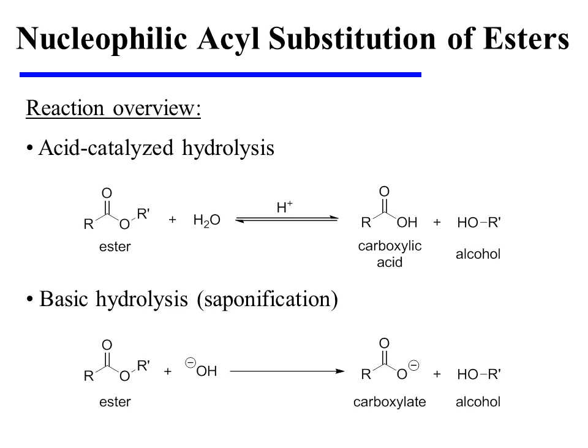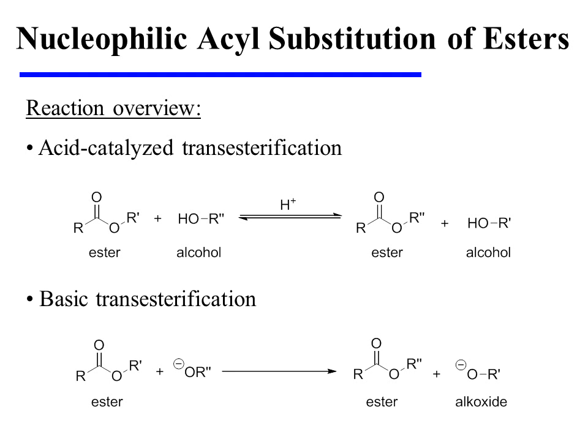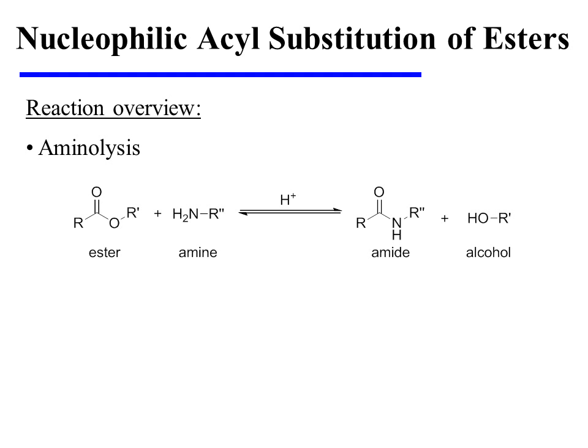In the hydrolysis reactions, esters are converted to the corresponding carboxylic acids or carboxylates, depending on whether acidic or basic conditions are used. In the transesterification reactions, one ester is converted to another — the difference is highlighted by using the generic designations R' and R'' for the alkyl groups connected to the carboxyl oxygens. In the aminolysis reaction, an ester is converted to an amide through treatment with an amine.